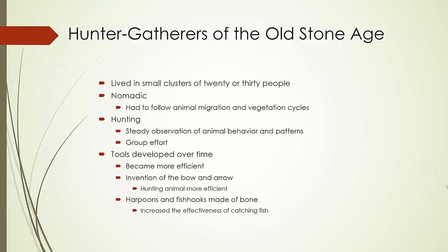They moved where their food went. If the vegetation cycle changed, they went along with it. If their animals migrated, they went with it — making them nomadic, meaning to move from one place to another. They had to use great knowledge and steady observation of animal behavior and patterns in order to hunt them. This took great effort and group effort; everybody had to work together in order to get food to survive.